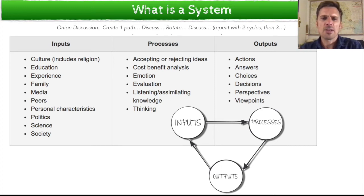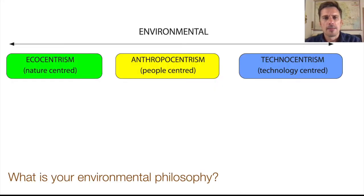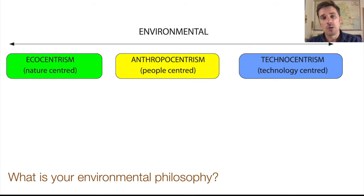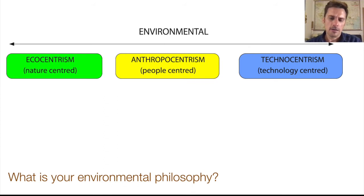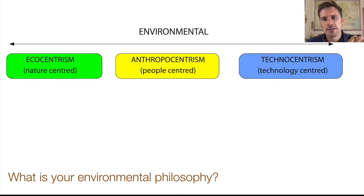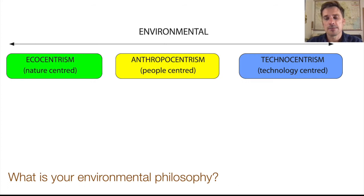And we can see it all over this course, not just in the example I gave. The three main environmental value systems that we will look at in this class are ecocentrism, anthropocentrism, and technocentrism.